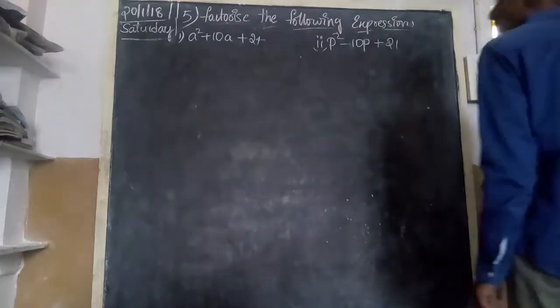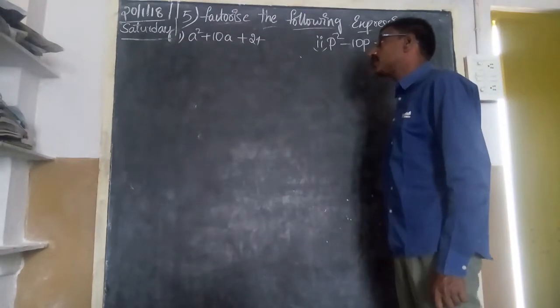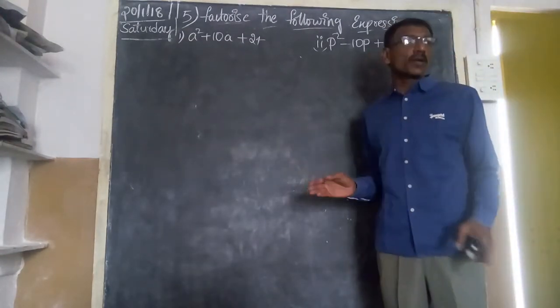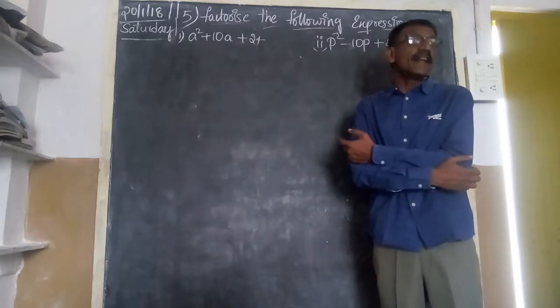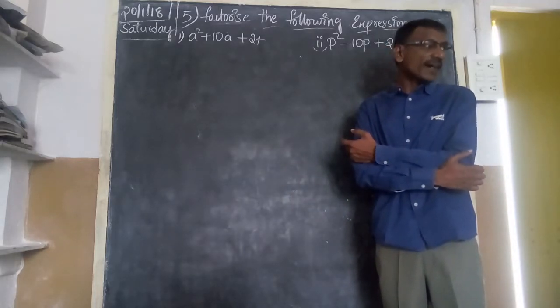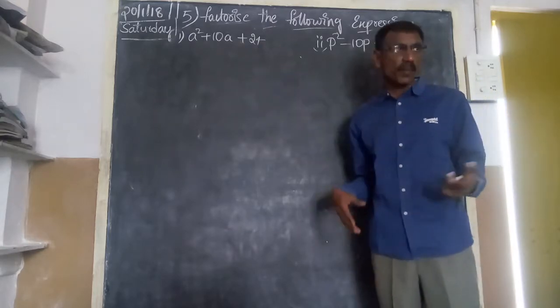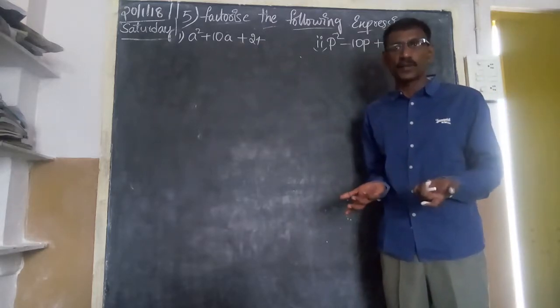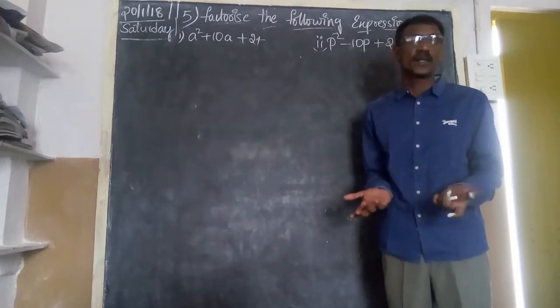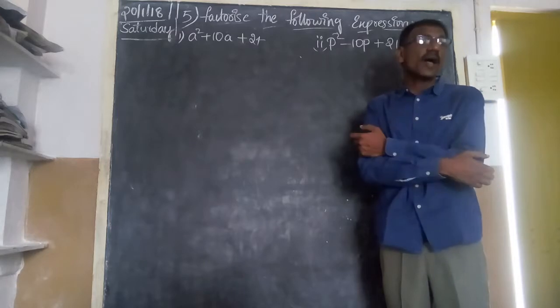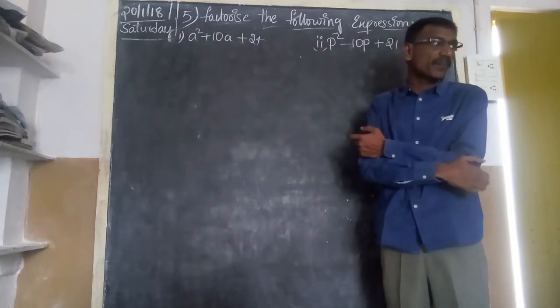Factorize the following expressions. We are given a² + 10a + 24. Up to now, you've done some problems by using identities. We factorized so many algebraic expressions. But this is not in the form of (a+b)² or (a-b)² or a²-b². But we have to factorize this one. I will give you an idea how to factorize this expression.